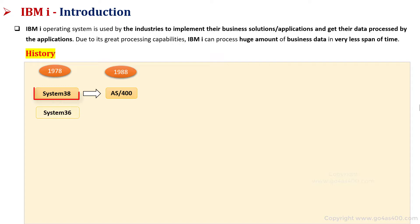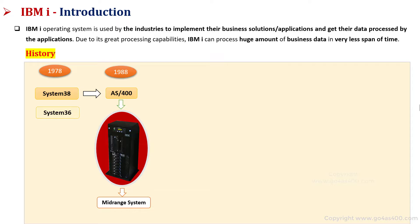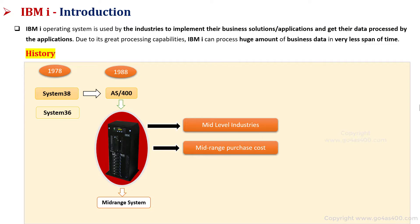AS400 was the extension of System 38 and had support for programs that were written for System 36. We call these systems mid-range systems because they were best suited for mid-level industries. The cost of these systems was optimized for mid-level industries and the processing capability was sufficient to process their business data. The AS400 architecture went through many evolutions to become a system with modern architecture which can support current technologies. The change in architecture also led to the rebranding of AS400.